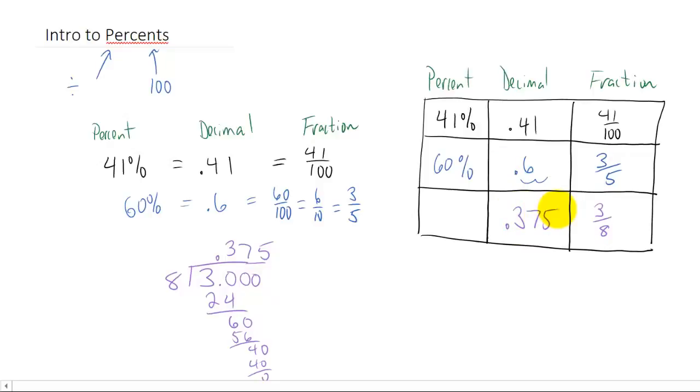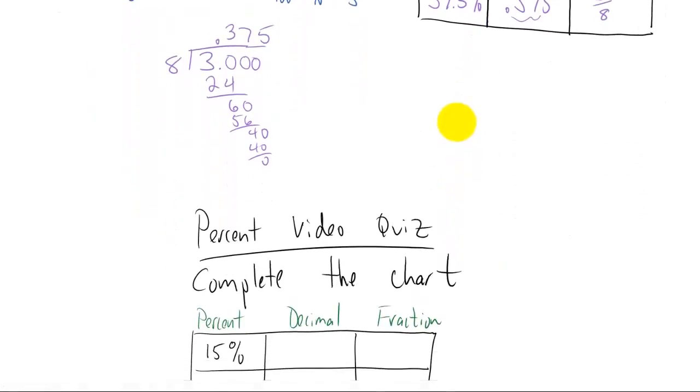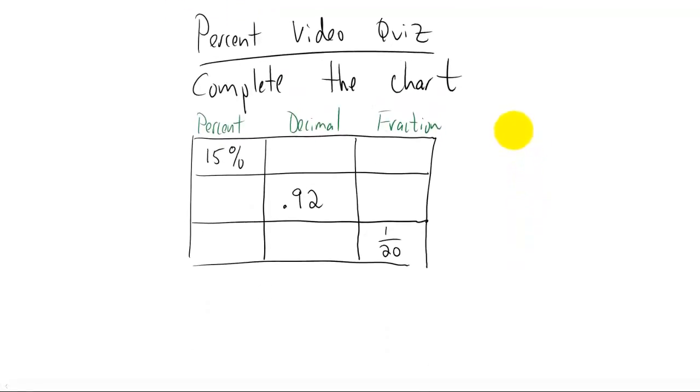Then if you want to take that decimal and convert it into a percent, that again just involves moving the decimal place two places to the right. So that's all I have for this very brief video, just a really basic introduction. You'll talk more about this in class. For a quick video quiz, just do exactly what I just did with different numbers. Complete this chart, and I'll see you in the next video.